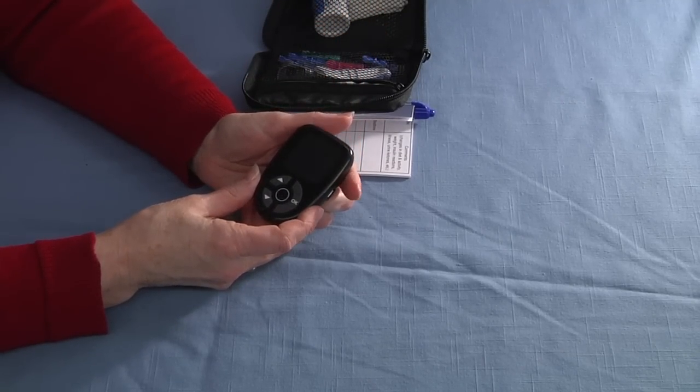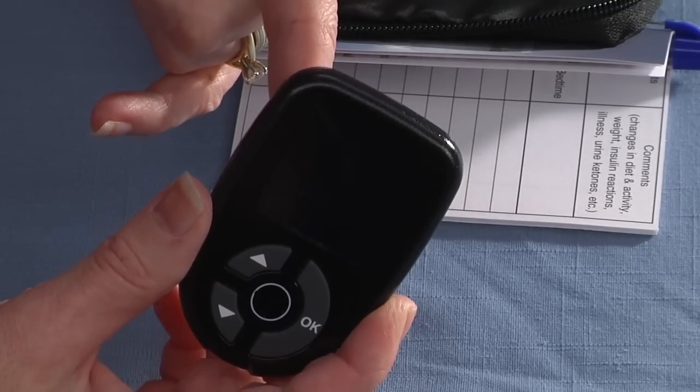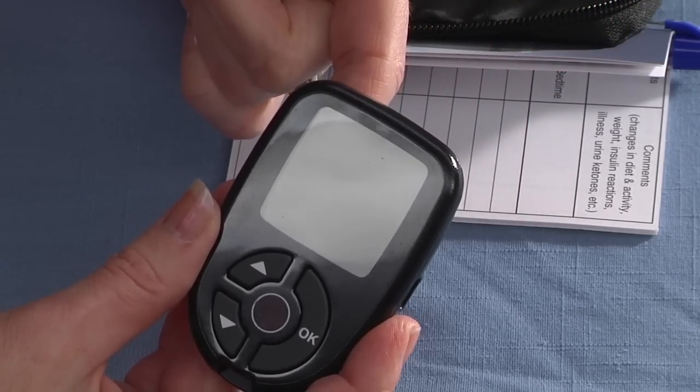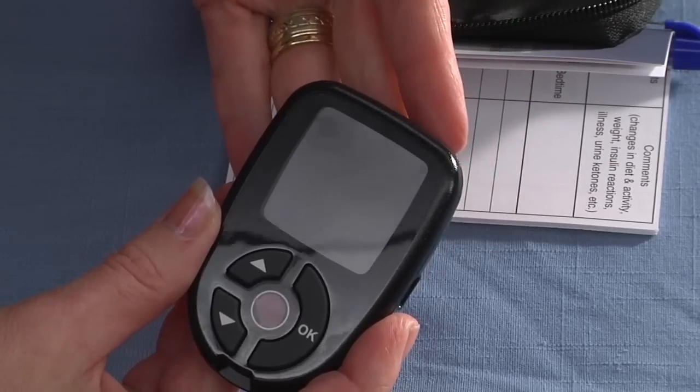A couple of things I want to point out about your meter is that there's an 800 number on the back of your meter. If you have any problems with your meter, simply call the 800 number on the back.